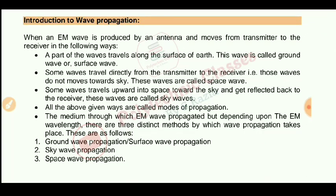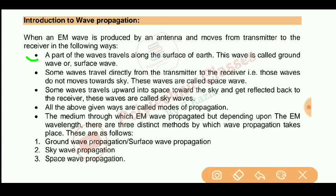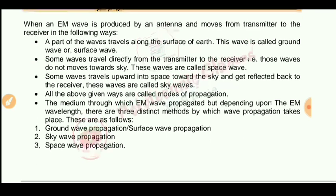Some part of the wave travels along the Earth's surface — this is called ground wave or surface wave. The wave that travels directly from transmitter to receiver without moving upward is called space wave. Some waves travel upward toward the sky and reflect back from there to reach the receiver — these are called sky waves. These three methods of propagation are called the modes of propagation.